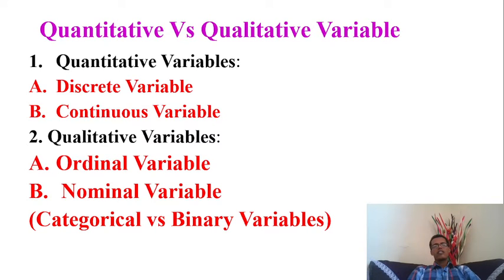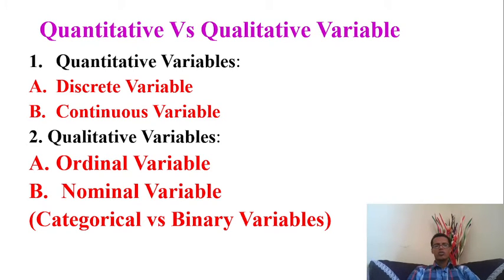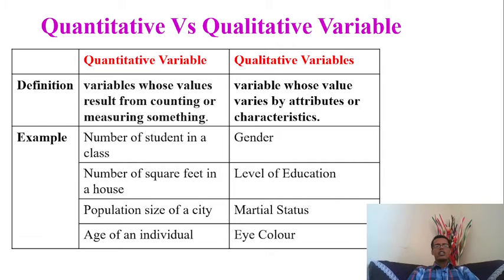Consider the quantitative variable and the qualitative variable. The quantitative variable is a continuous variable — countable and measurable. The qualitative variable is a nominal variable. The nominal variable reflects the order of the material, and the categorical variable can be a binary or dichotomous variable.